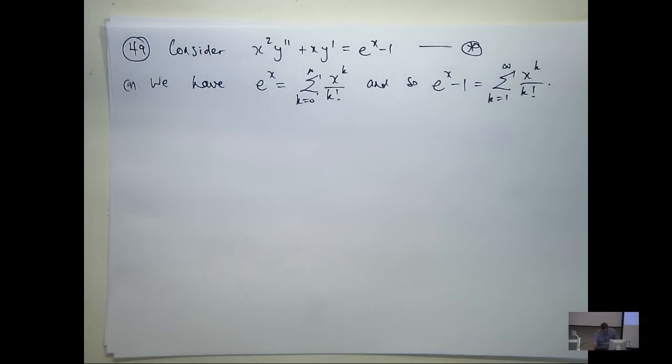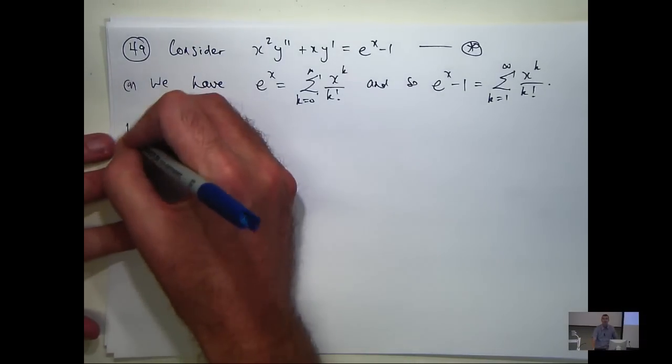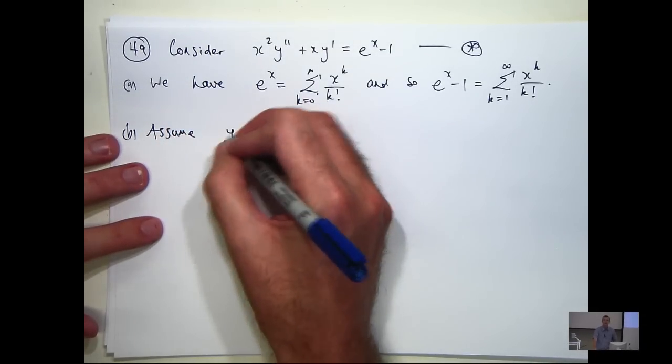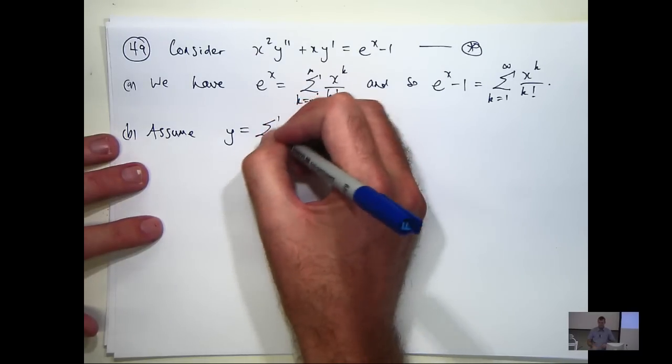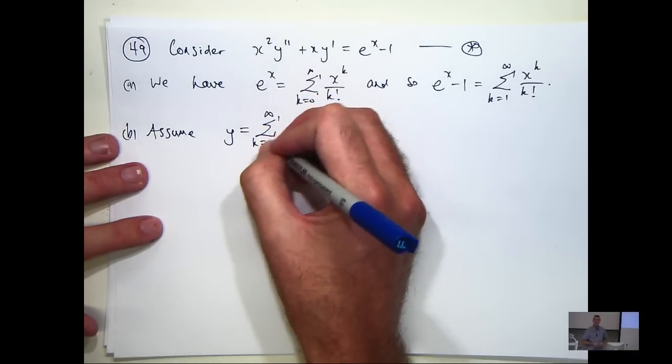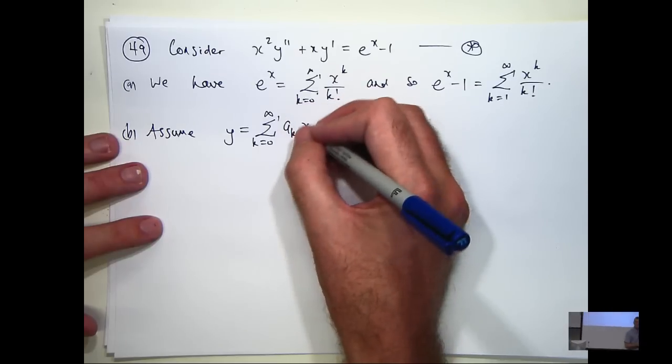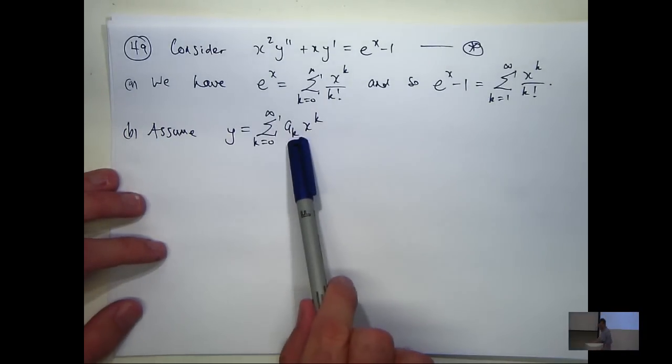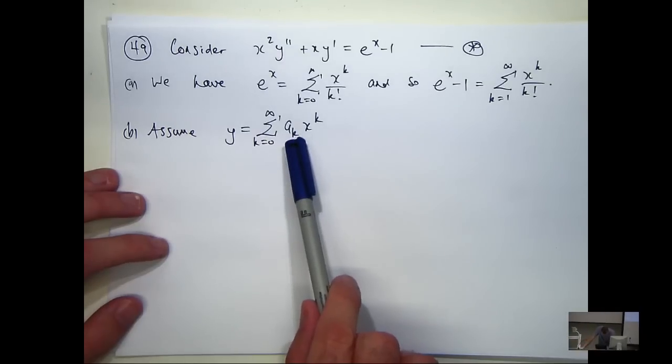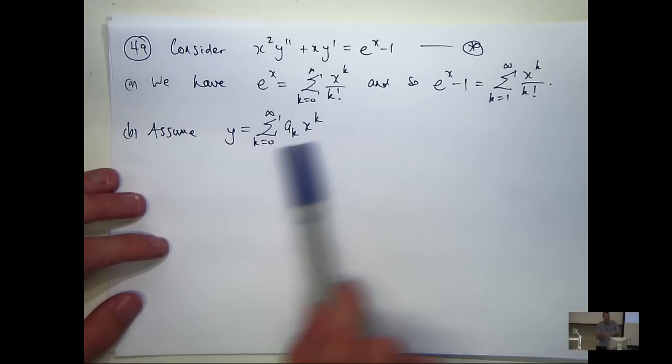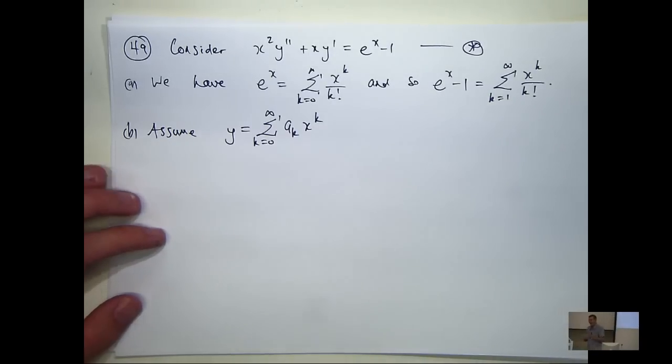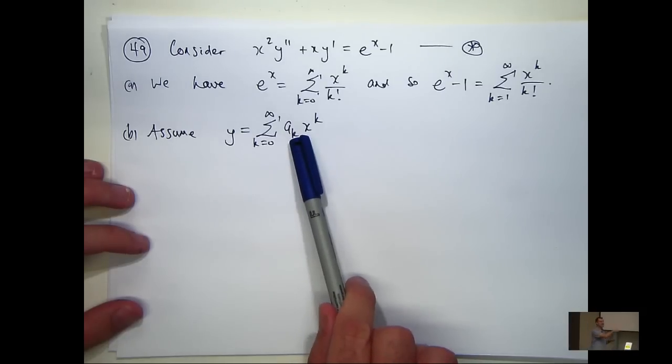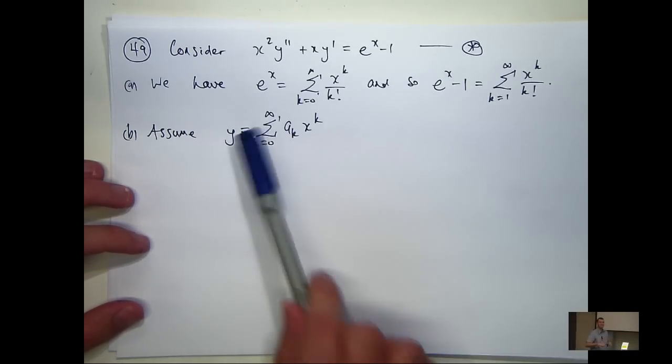part B says assume the solution to our ODE is in the following form. Now, if we can determine some sort of setup for A sub k, then we've completely determined our solution. So we're assuming it's a power series, and what we're going to try to do is find these coefficients, these A sub k's. Once we know those, we have the whole series, so we know our solution.